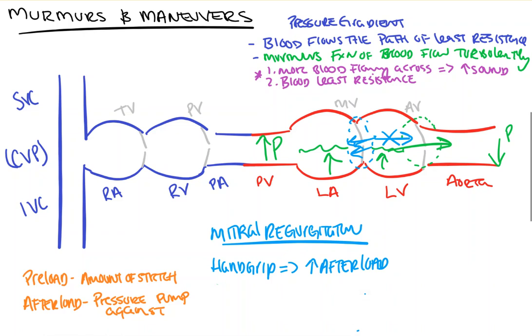Because blood does not want to move forward; it wants to move backwards because you've increased the afterload. Similarly, doing something like squatting, which is going to lead to an increase in blood volume within the heart, will lead to, as a result of just sheer more volume, more blood going across the incompetent valve, thus increasing the murmur. And then of course, anything that makes it easier for blood to be pushed forward, such as amyl nitrate decreasing the afterload or decreasing the preload to the heart, say by rapidly standing or Valsalva-ing, will lead to a decrease in the murmur.